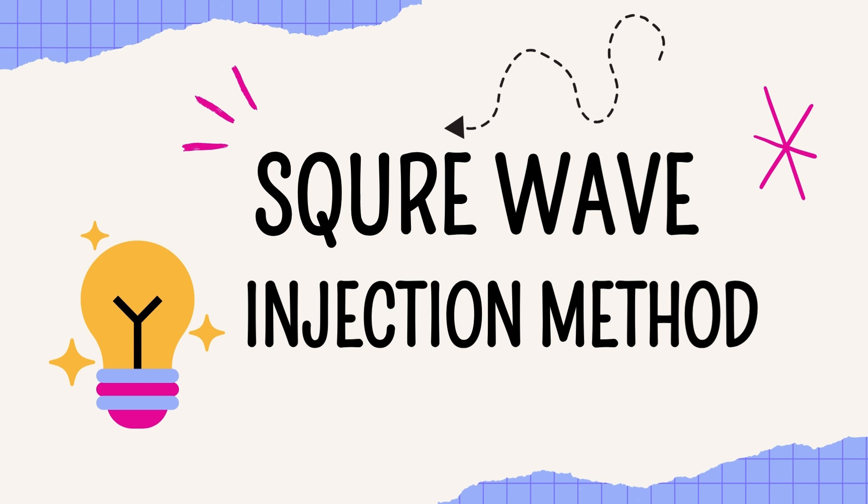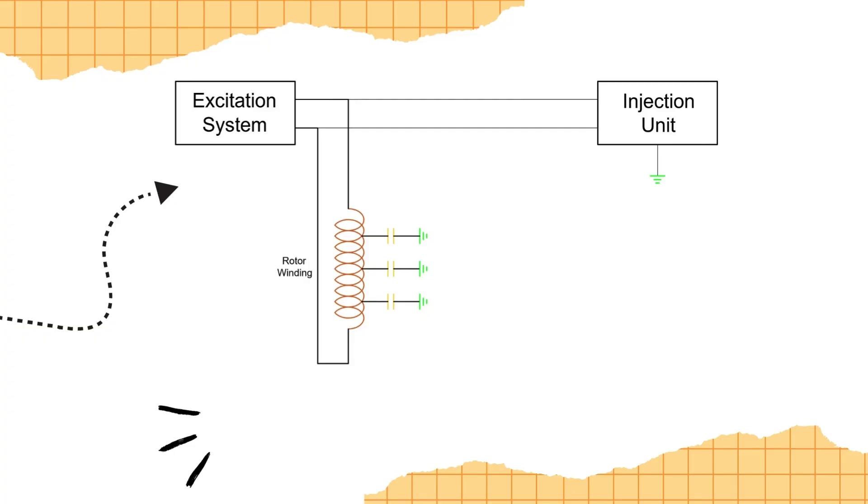Finally, we've arrived at another intriguing method to measure insulation resistance, the low-frequency square wave injection method. Similar to the DC injection method, this procedure also introduces voltage into the rotor winding. However, instead of a DC voltage, a low-frequency square wave is used. The injection frequency of this square wave depends on the rotor winding's capacitance value to earth.